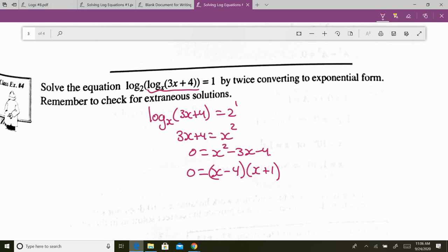What multiplies to negative 4 and adds to negative 3? negative 4 positive 1. So what does x equal? Check which one gets thrown out. Or do any of them get thrown out? None of them get thrown out? 100% sure about that?